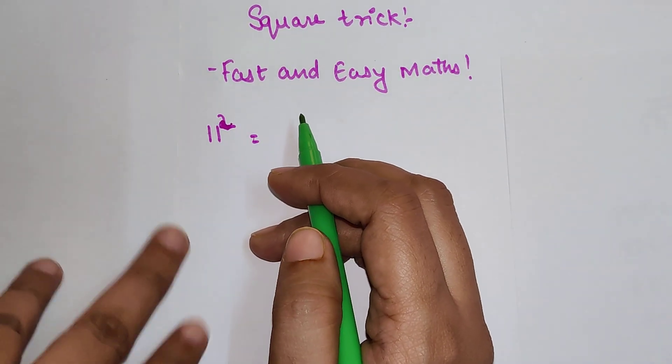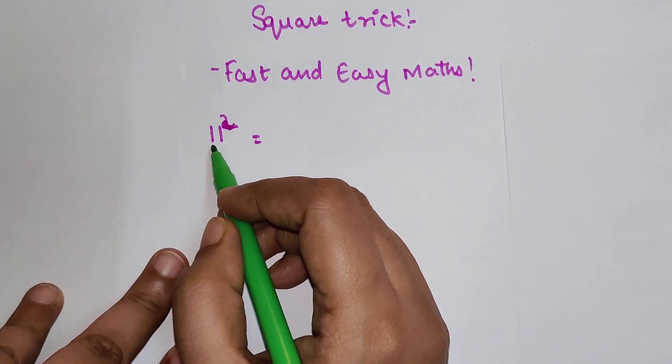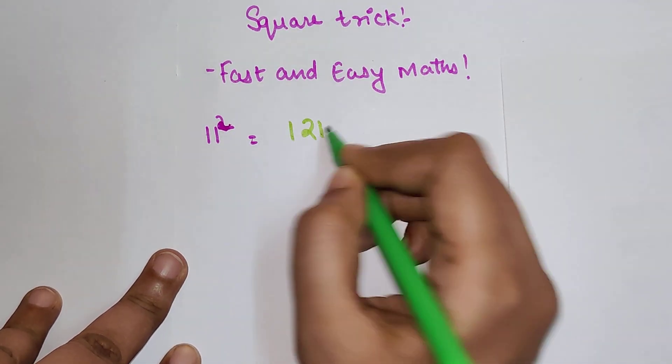So students, today I am going to show you an interesting square trick. So we have what? 11 squared, we know it is nothing but 121.